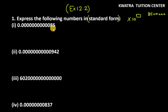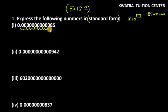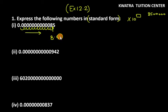So let's convert the first number into standard form. We move from left to right: 1, 2, 3, 4, 5, 6, 7, 8, 9, 10, 11, 12 — you have to stop here and count how many moves you made. We made 12 moves. When moving left to right, you take a negative sign. So it becomes 8.5 into 10 raised to the power of minus 12.